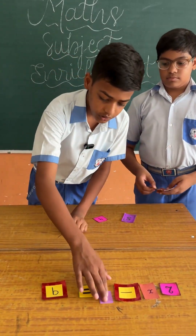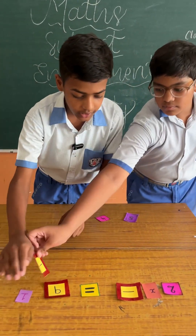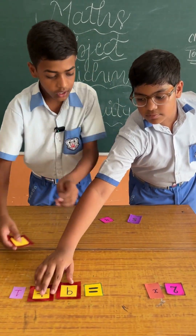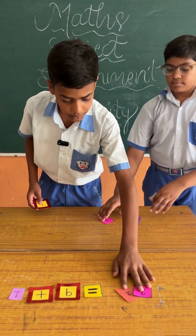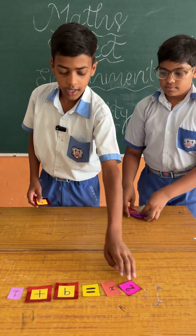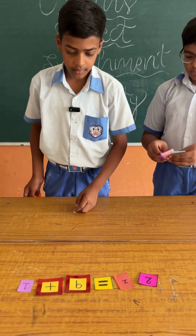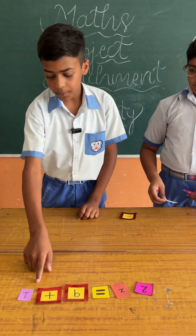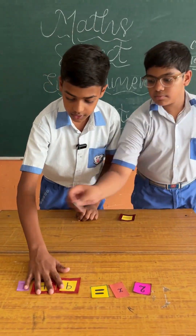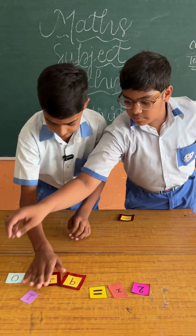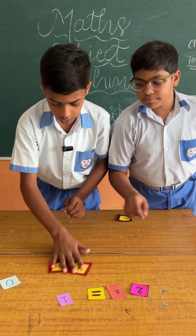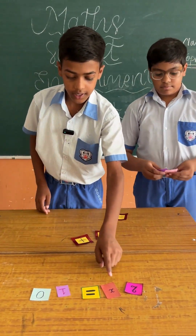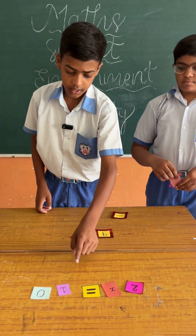We transpose the 1 to the right hand side and the minus sign changes to plus. The equation becomes 2x equals 9 plus 1. Adding them both, 9 plus 1 equals 10, so 2x equals 10.